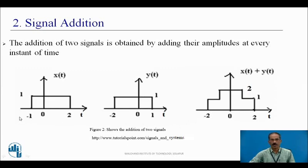From −2 to −1, x(t) amplitude equals 0 and y(t) amplitude equals 1, so 0 + 1 = 1. From t = −1 to 0, this is 1 and this is also 1, so 1 + 1 = 2. From 0 to 1, this is 1 and this is also 1, so 1 + 1 = 2. From 1 to 2, this is 1 and this is 0, so 1 + 0 = 1. That is x(t) + y(t).